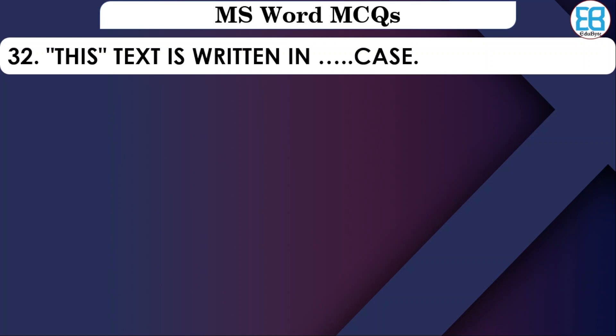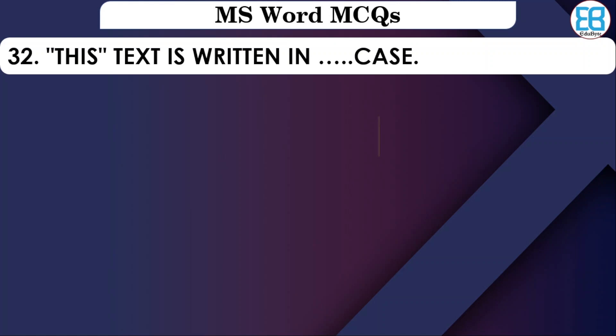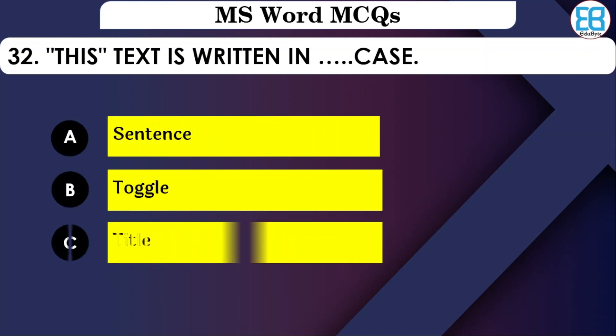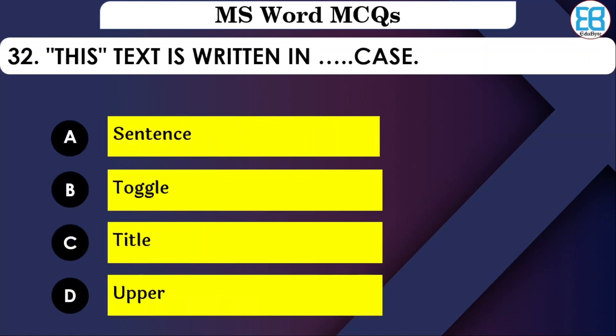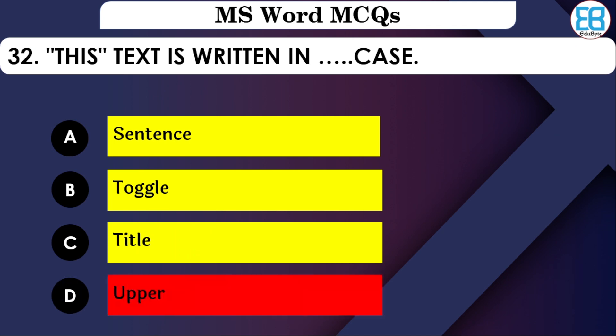If text is written in upper case, what does that mean? The options are: Sentence, Toggle, or Title case. The correct option is Upper Case — capital letters are upper case, small letters are lower case, and Sentence case means the first letter is capital.